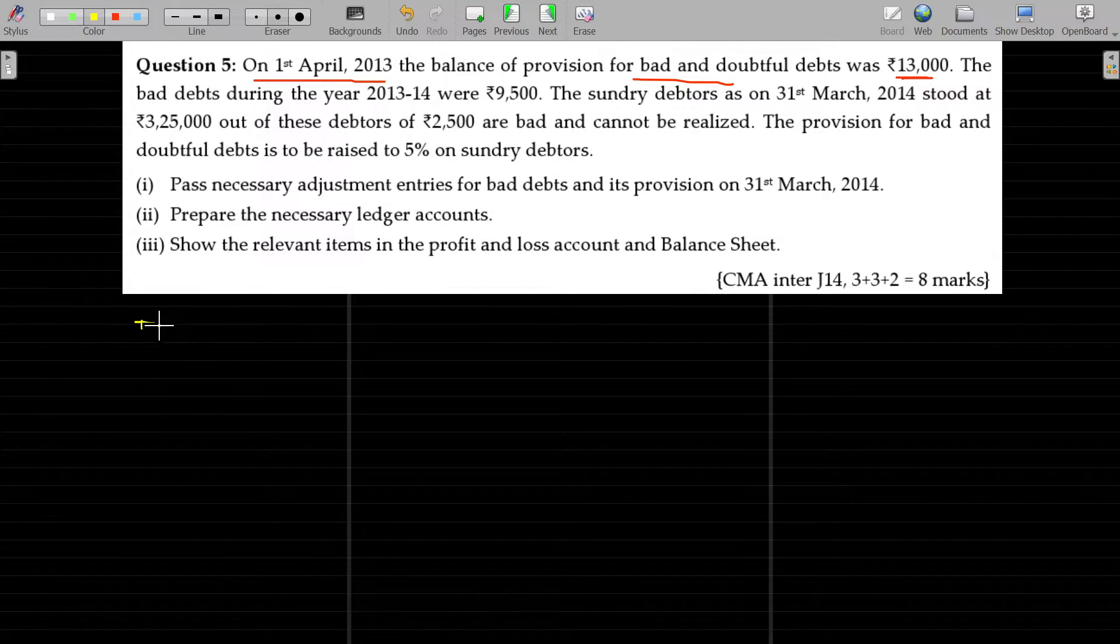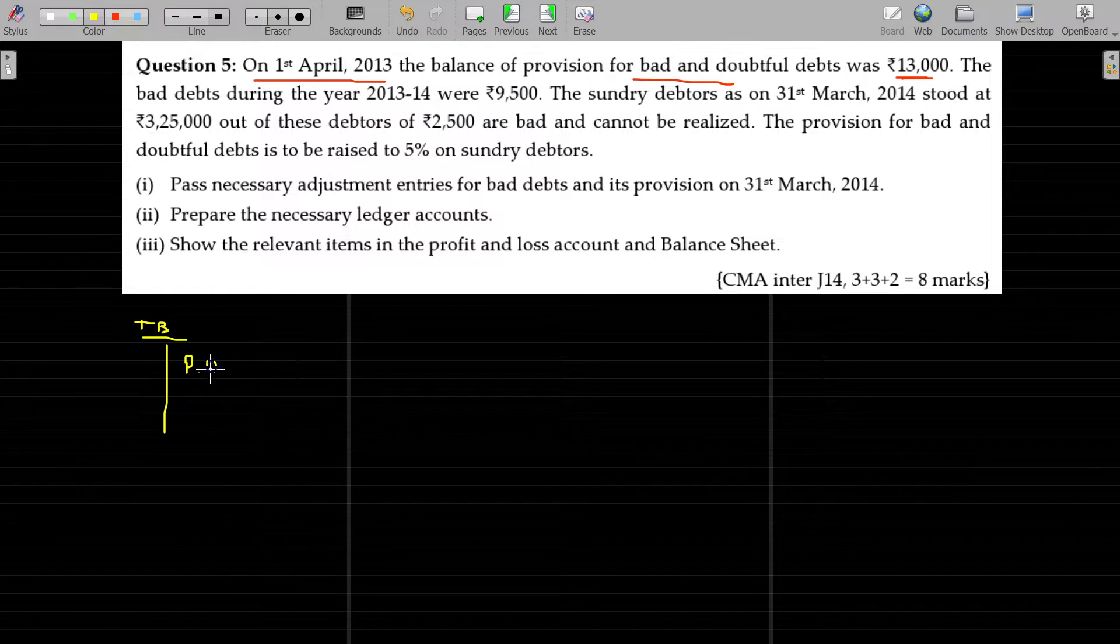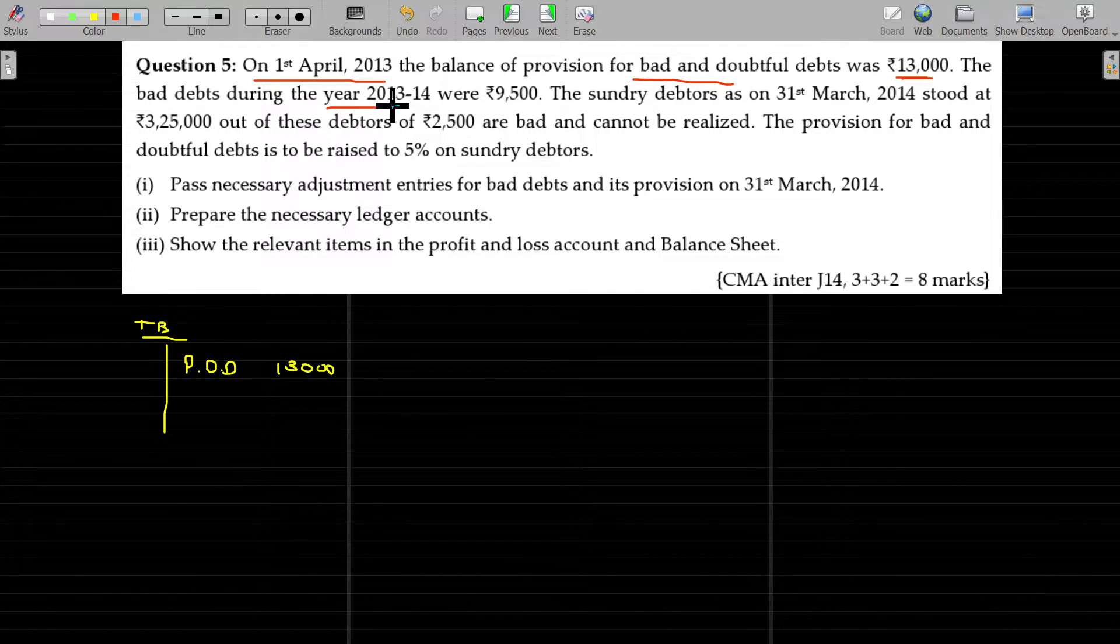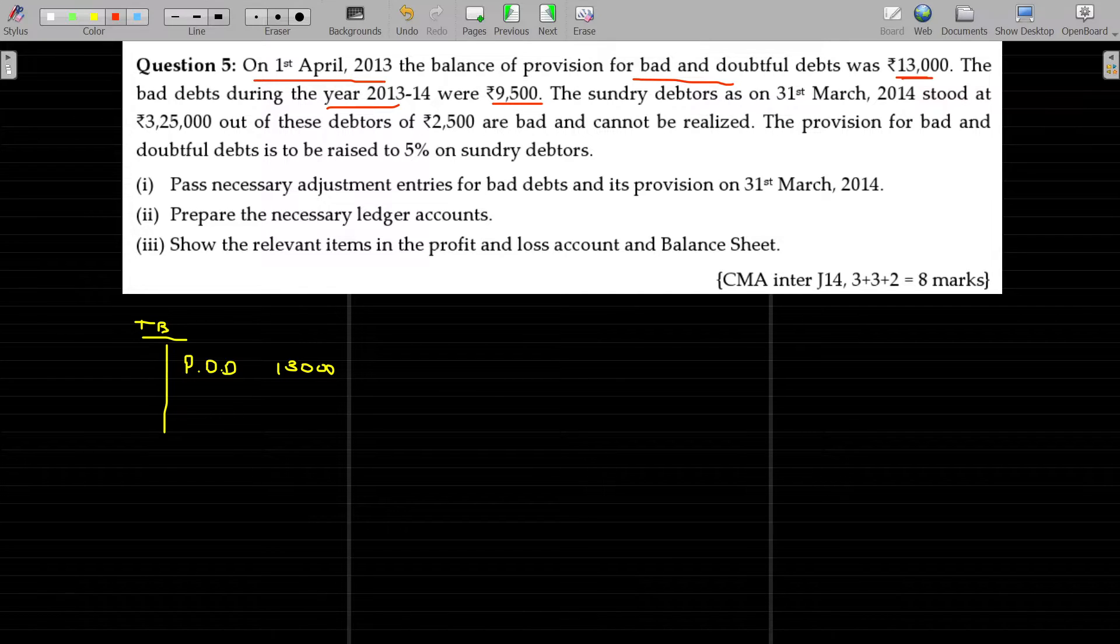Imagine how this will appear usually in trial balance. Opening provision for doubtful debts should appear in the credit side 13,000. The bad debt during the year 2013-14 were 9,500.